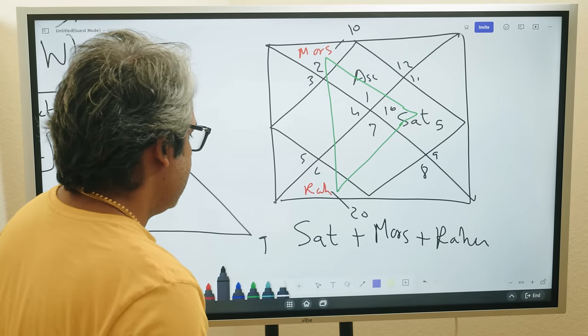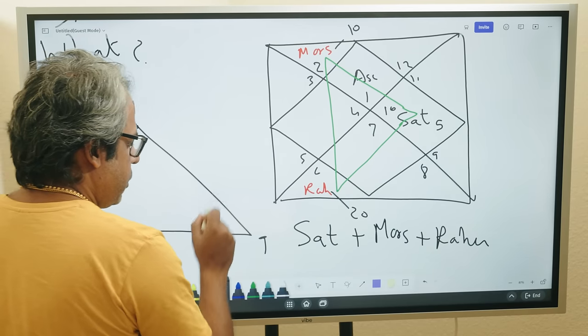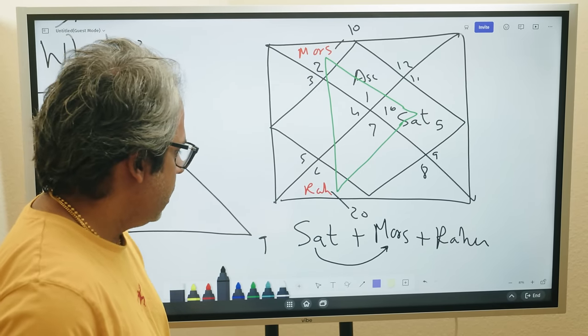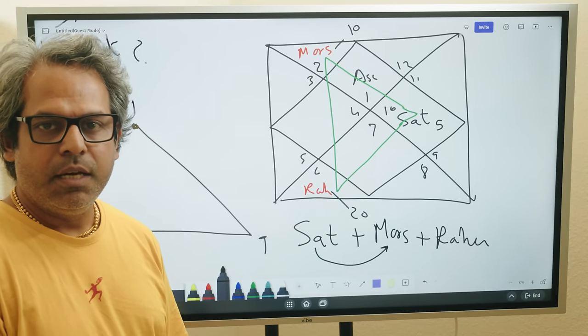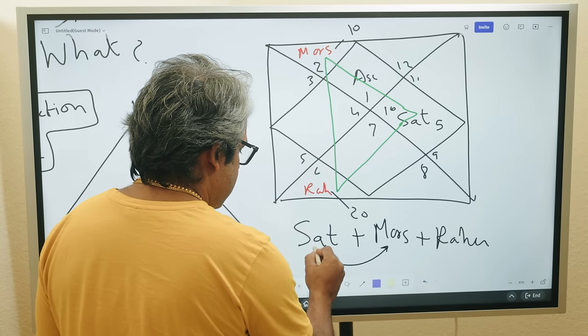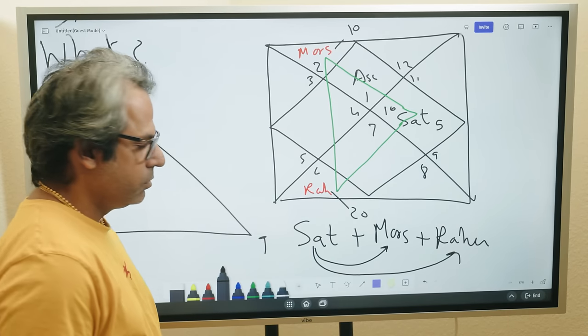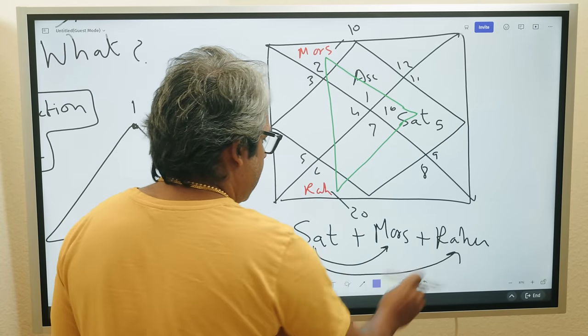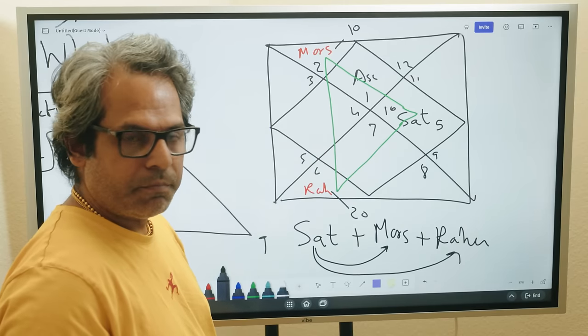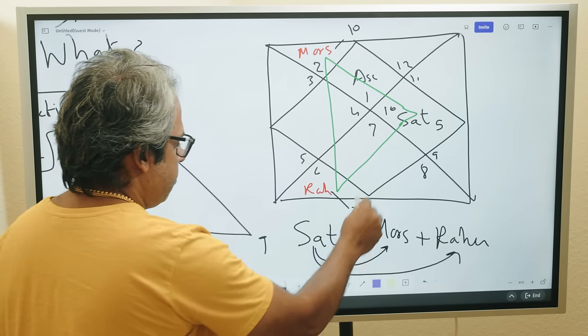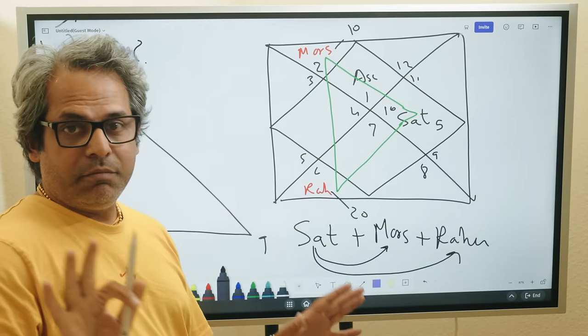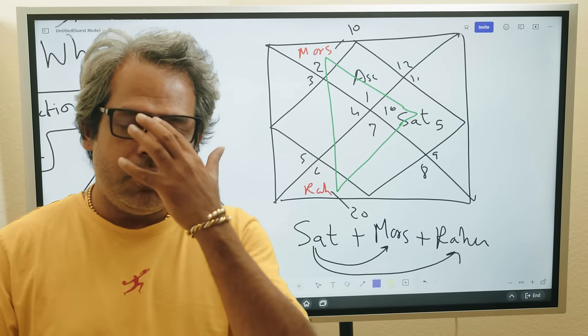This is the very first thing. Saturn is profession, so this individual for profession is going to have to have technical skills and knowledge, either engineering or dealing with some machinery. They're going to need technical skill, technical knowledge. Then we see after this, Saturn then meets Rahu. It's not Saturn Mars meeting Rahu, we're making step-by-step combination. Saturn meets Mars first, they connect, then it meets Rahu.